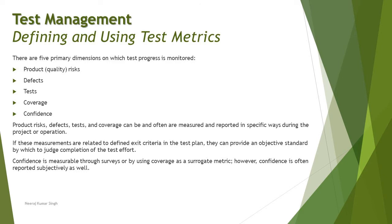Confidence basically stands for the tester's confidence. It is a somewhat virtual kind of metric but it's still important to measure — what kind of confidence does your team have on the product in order to release it. All five parameters play a vital role and cover different segments to be measured as part of the testing life cycle. These parameters can be measured and reported in specific ways during the project.